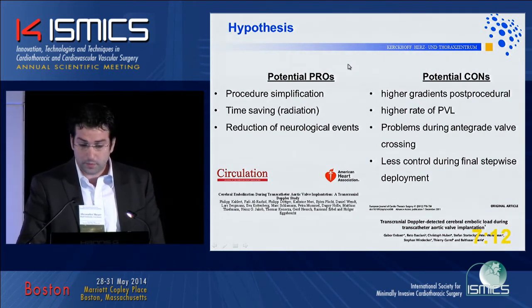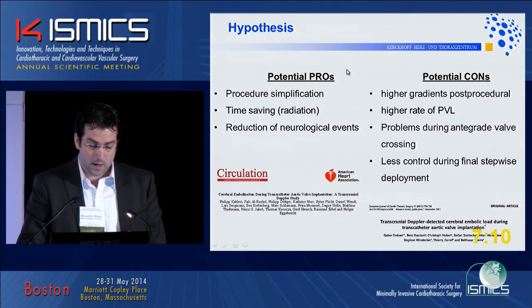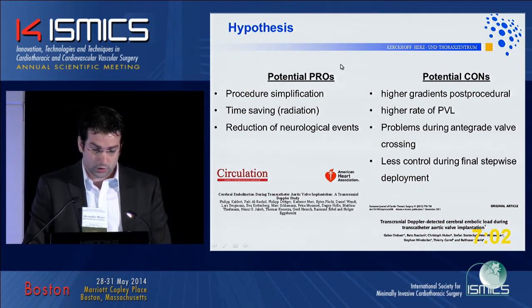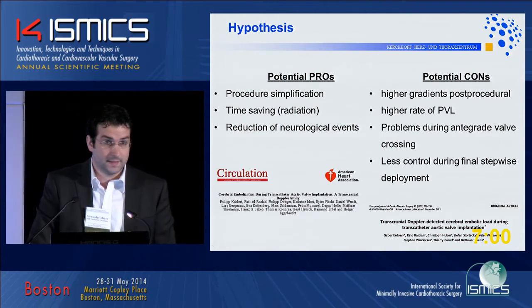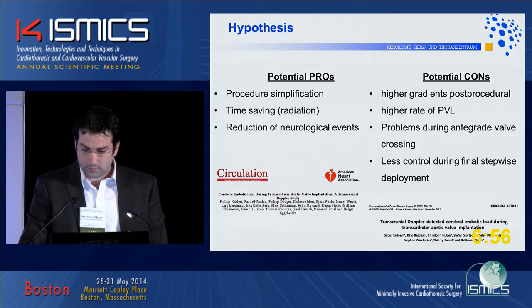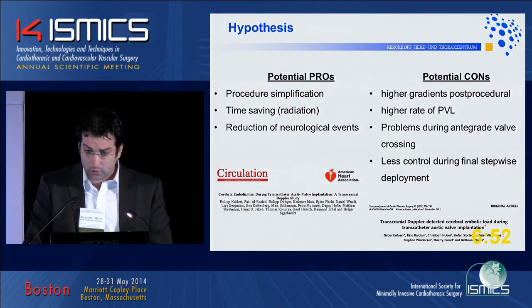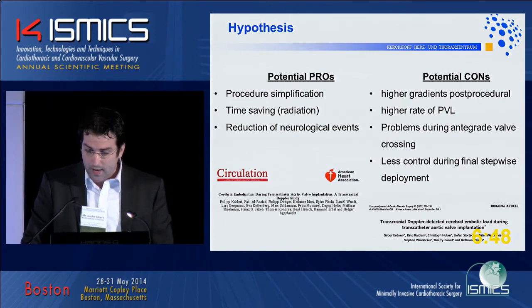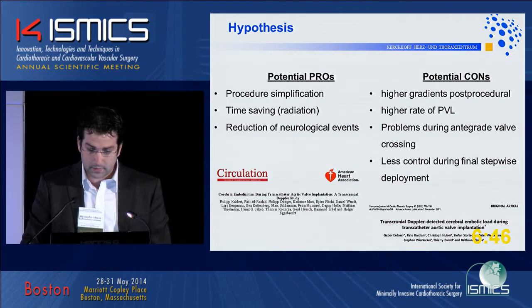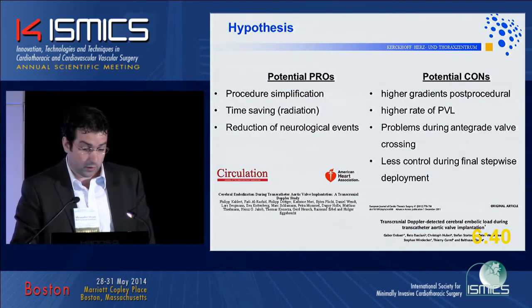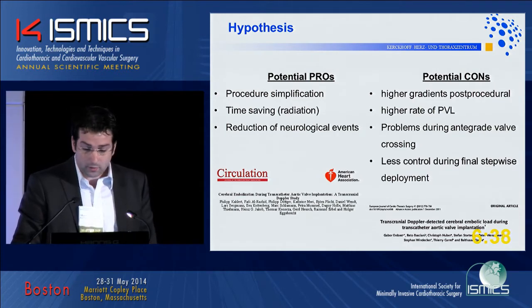We aimed in our study to assess the potential pros and potential cons. A potential pro could be procedure simplification. Also, the omission of one additional step could save time and radiation time, and it could lead to reduced neurological event rates because balloon valvuloplasty itself is associated with an increase in neurological events. However, there are also potential cons: it could lead to higher post-procedural gradients, a higher rate of paravalvular leakage, problems during antegrade valve crossing, and the likelihood of less control during final stepwise deployment.